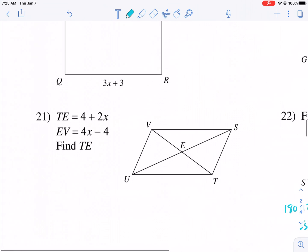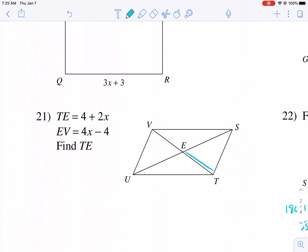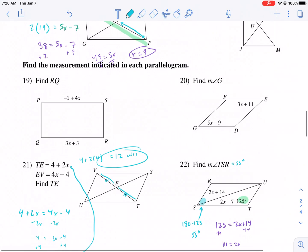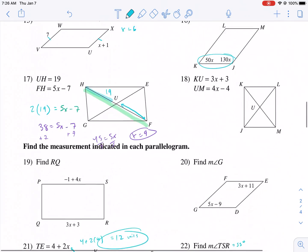Just make sure you plug in values when you're done. For example, TE, last one, promise, and VE, EV, and TE. We know that 4 plus 2x equals 4x minus 4 because diagonals are bisected. So I'm going to subtract 2x first. 2x minus 4 equals 4. I add 4, add 4, and I get 8 equals 2x. So x equals 4. That's not my answer. I need to plug this in to TE. So I get 4 plus 2 times 4, and I get 12. So it should be 12 units for this guy. Make sure you include units. And that's really all there is to it. These other ones should be pretty easy from there.